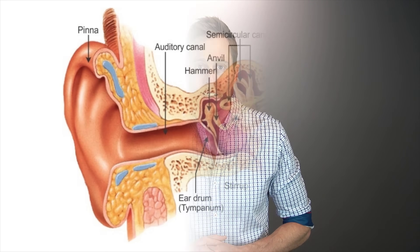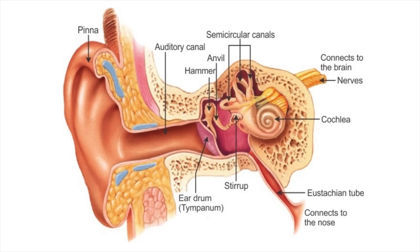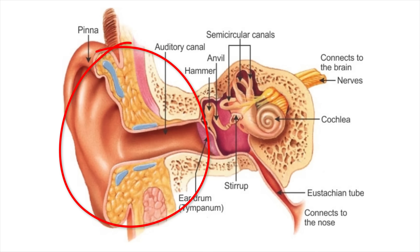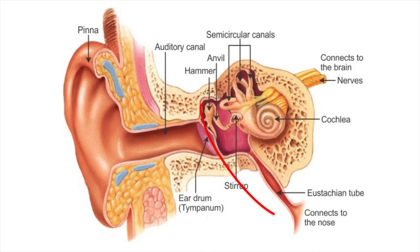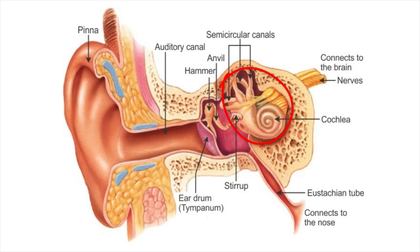Now let's first take a look at how the human ear works so you can understand the concept of upward spread of masking. The human ear consists of three parts: the outer ear, which includes the pinna, ear canal, and eardrum; the middle ear, which includes the three middle ear bones called ossicles, the middle ear cavity, and the Eustachian tube; and the inner ear, which consists of the semicircular canals, which control balance, and the cochlea, which is your hearing organ.